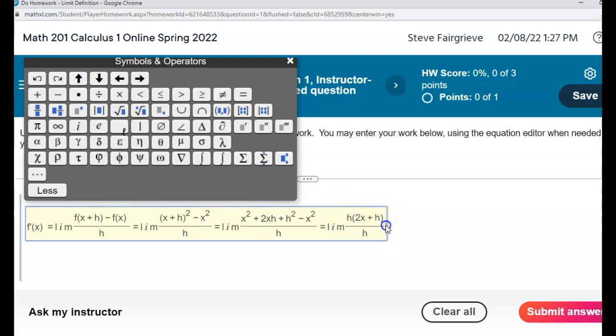And then you'd be left with the limit of 2x plus h. So at that point we can just let h go to zero, and we just get the limit of course is 2x.